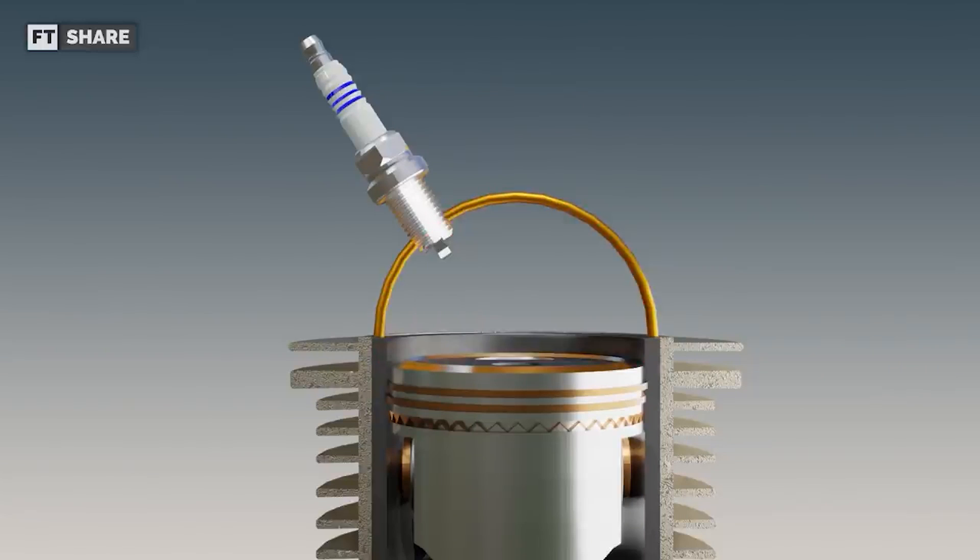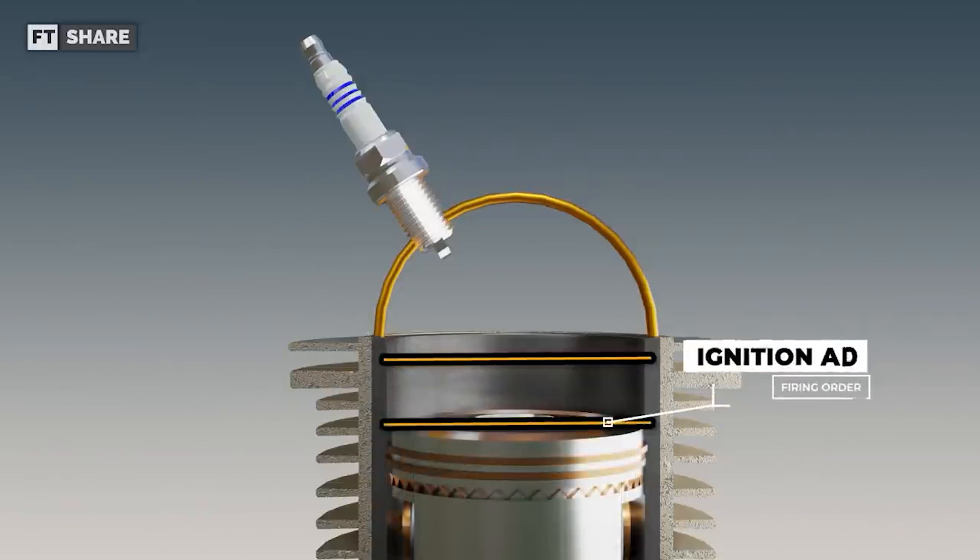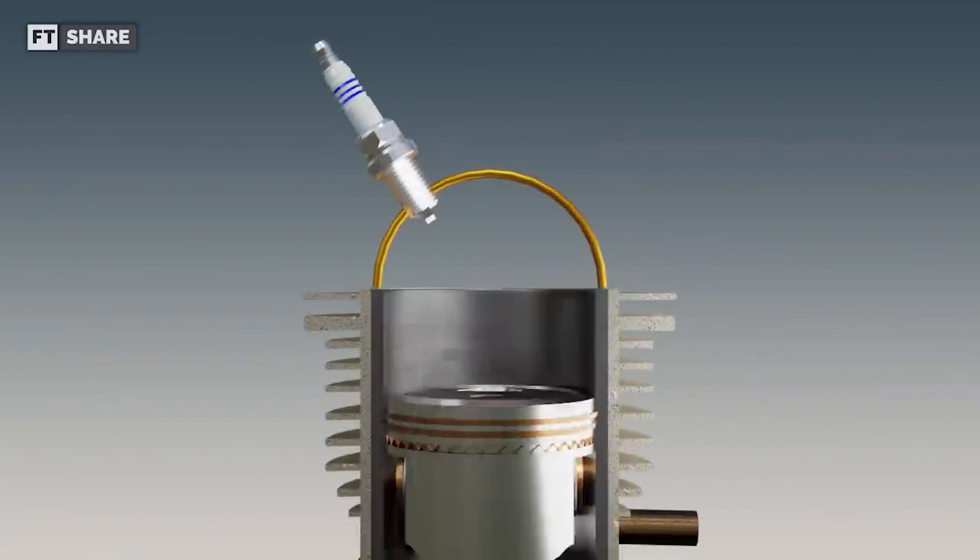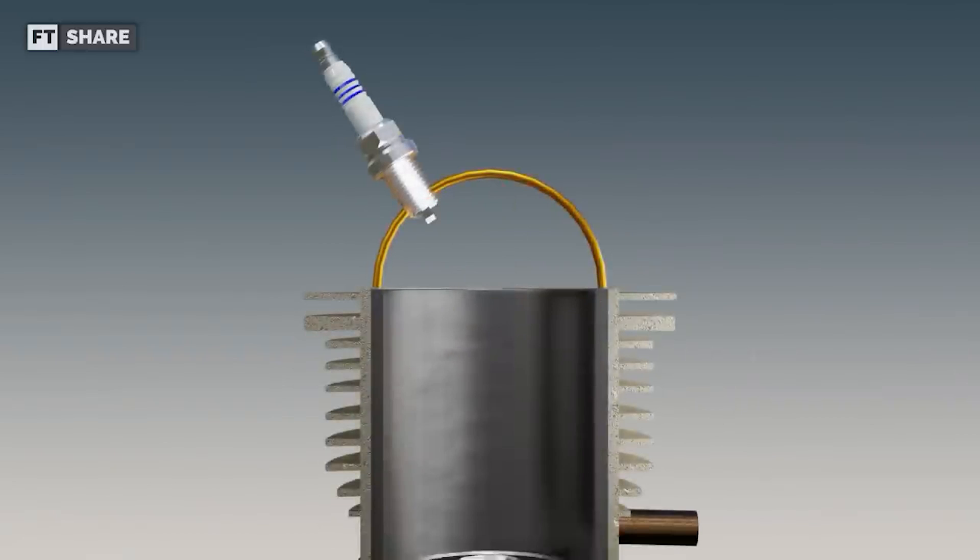Another way to address this issue is to start the combustion process earlier. This is called ignition advance, which is designed to counteract the short combustion time when the engine is revved at high RPMs. The faster the engine moves, the shorter the combustion time becomes.